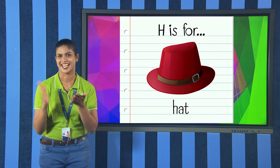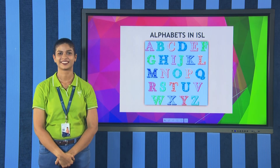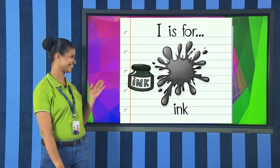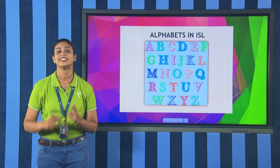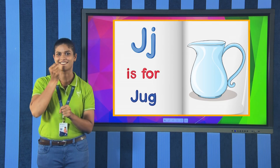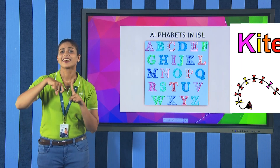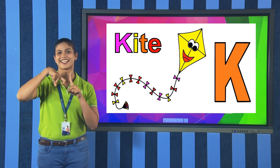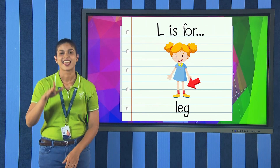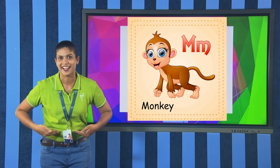Next, letter H — what is the word with H? H, A, T — hat. What is the word with I? Ring. Next, letter J. Next, K — kite — K, I, T, E. L — leg. M — monkey.